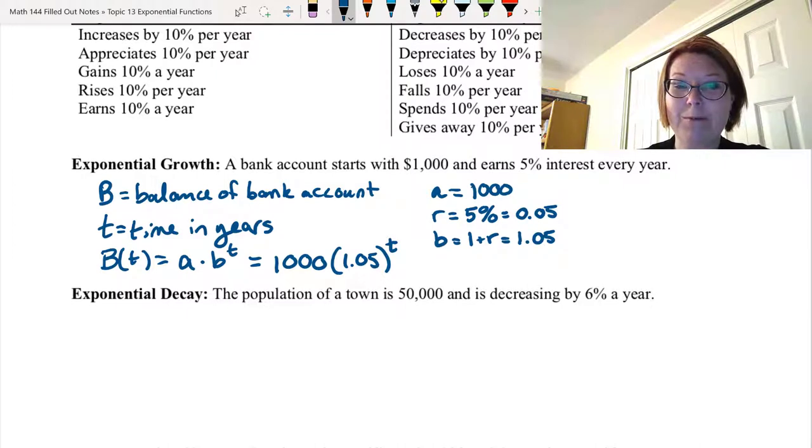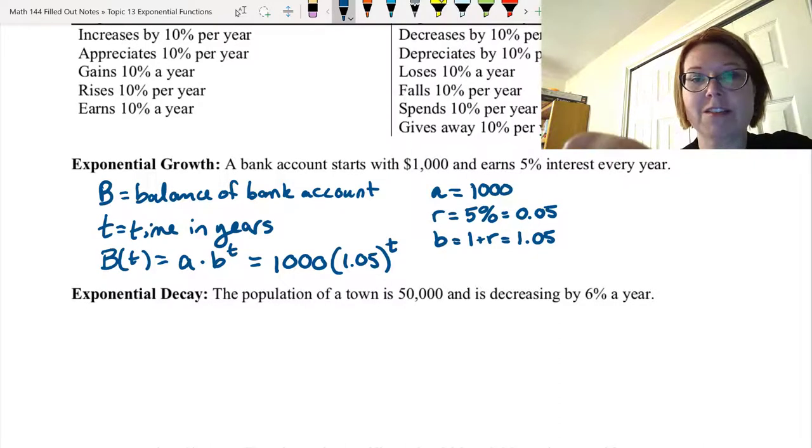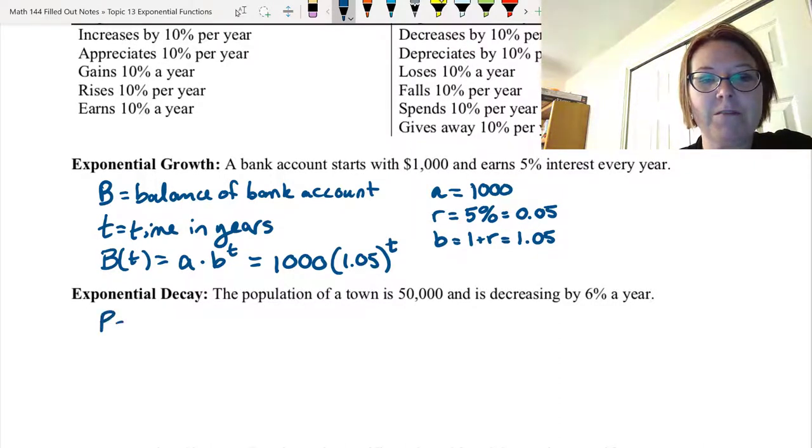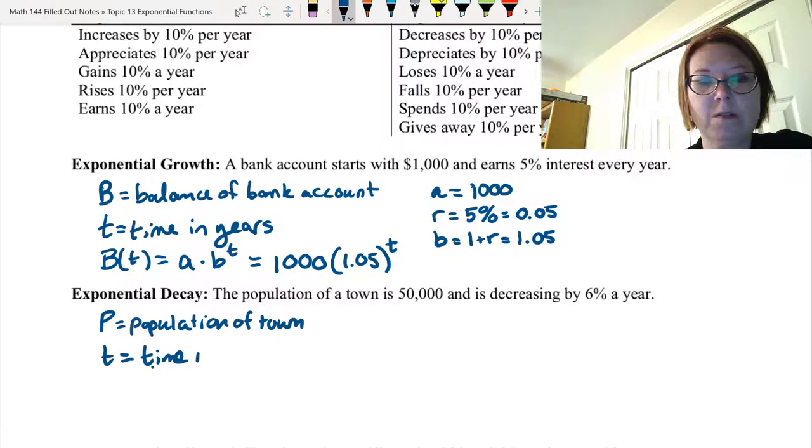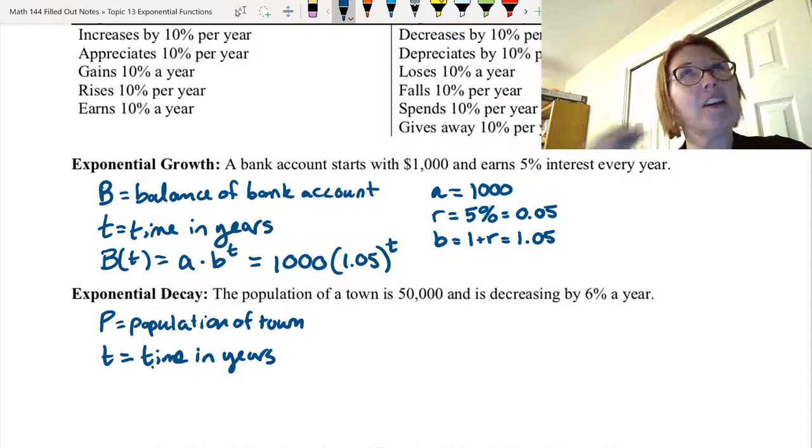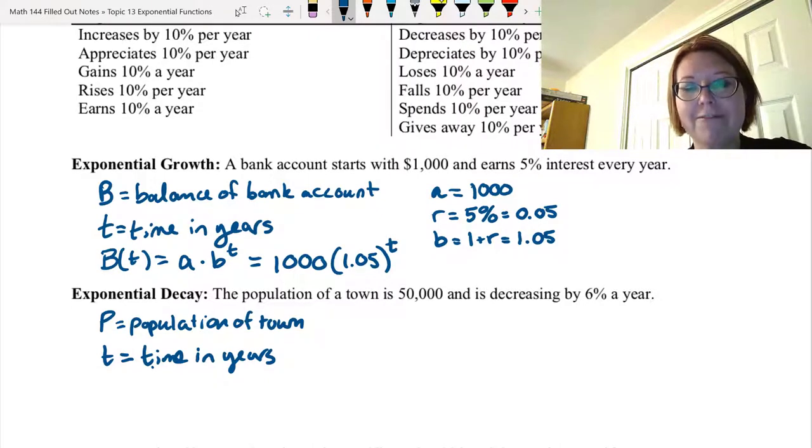Let's look at a decay problem now. We have a population of a town. It's 50,000. It's decreasing by 6% a year. Again, let's start by declaring our variables. So let's use capital P for the population of the town. And T, lowercase t, will be the time. We better state what units it's in. So this is the time in years. It's not always in years. When we talk about things like bacteria growth or compounding interest, it might be months or hours. So just be careful about that. Don't ever just say time. Time has a measurement unit too.